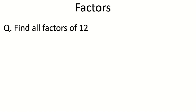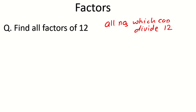Let's have one question so we can find factors. Find all factors of 12 — that means write all numbers which can divide 12. If you are good at calculation you can do it orally, but let's make a factor tree. You can split 12 into 2 and 6, or 4 and 3. 2 cannot be broken further, but 6 can be split into 2 and 3. From the other branch, 4 becomes 2 multiply 2, and 3 cannot be broken further.